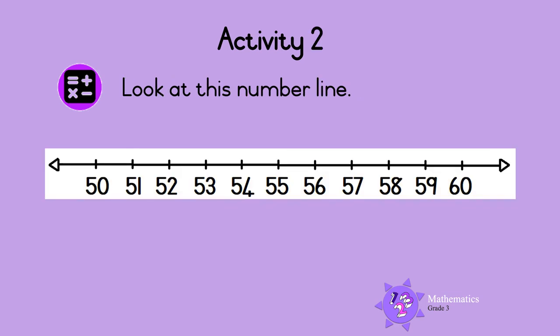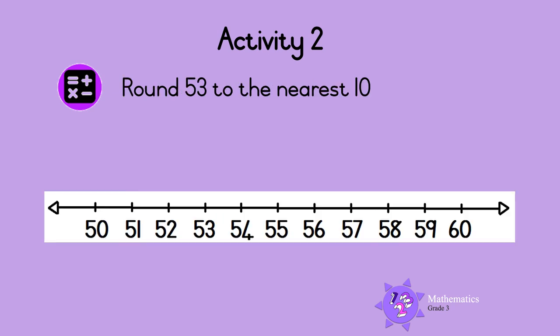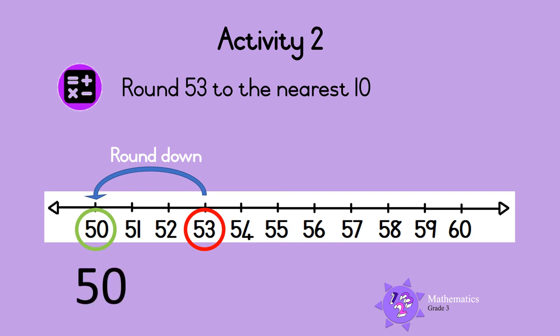Activity 2. Look at this number line. It starts at 50 and ends at 60. Round 53 to the nearest 10. Here is 53 on the number line. 53 is closer to 50, so round down to 50. So 53 rounded to the nearest 10 is 50.